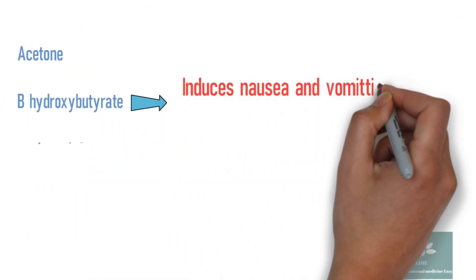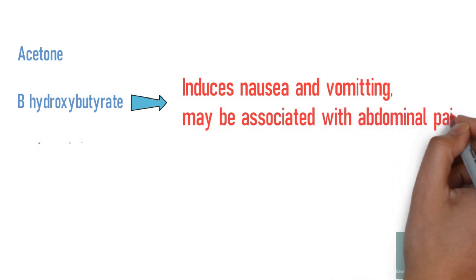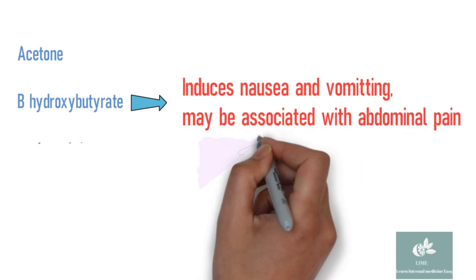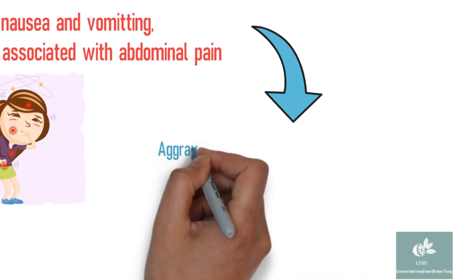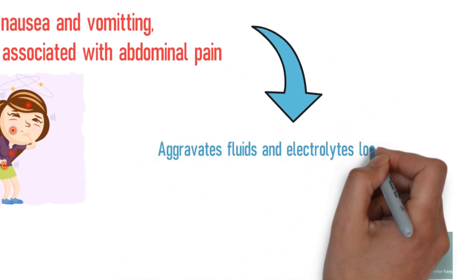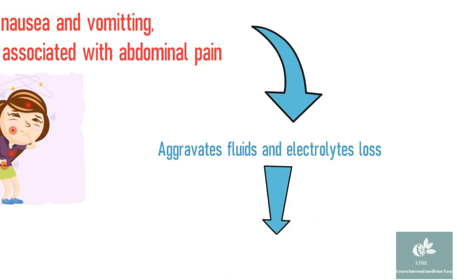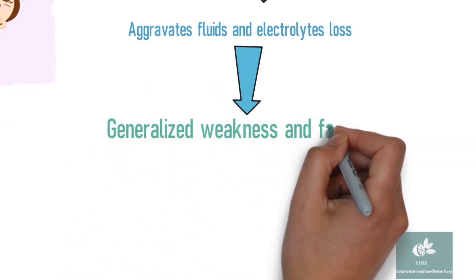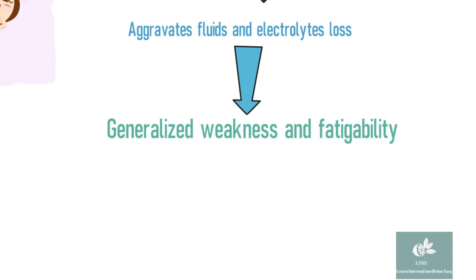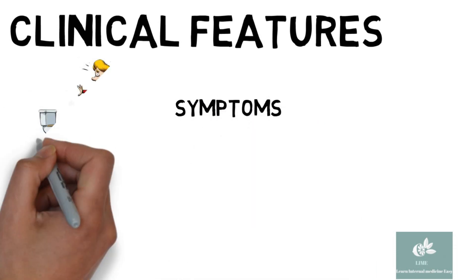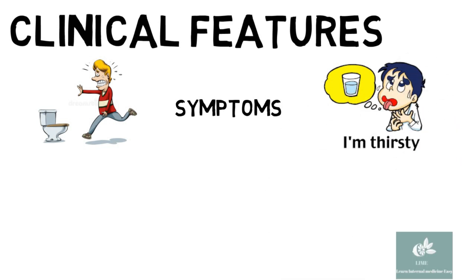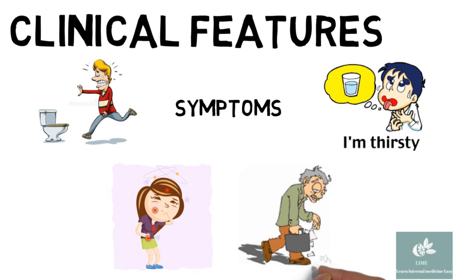Beta-hydroxybutyrate induces severe nausea and vomiting, which may be associated with abdominal pain. Nausea and vomiting consequently aggravate fluid and electrolyte loss, which results in generalized weakness and fatigability. To summarize the common symptoms in DKA: polyuria, polydipsia, nausea, vomiting and abdominal pain, and generalized weakness and fatigability.